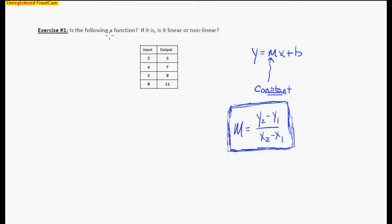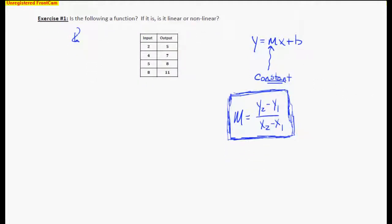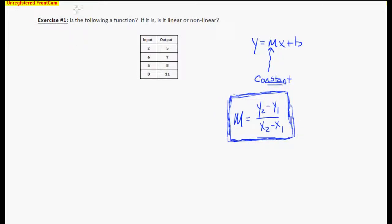So first, let's decide: is the following a function? In order to be a function, each of these inputs map to only one output. So you can see 2 maps to 5, 4 maps to 7, 5 maps to 8, and 8 as an input maps to 11. We don't have any repetition over here under the inputs. We don't have 2 mapping to 2 different numbers. So, first of all, yes, we're going to put down a yes for whether it's a function or not.